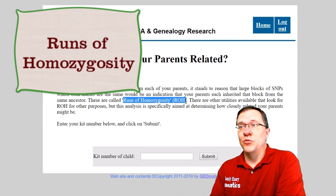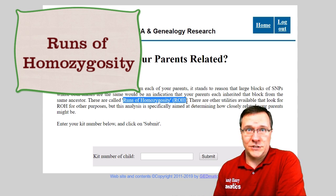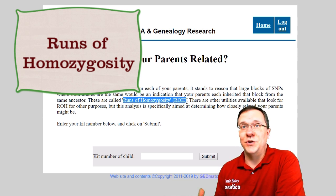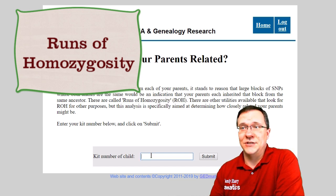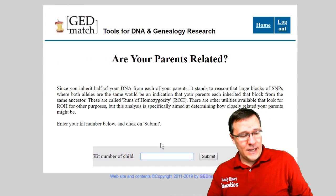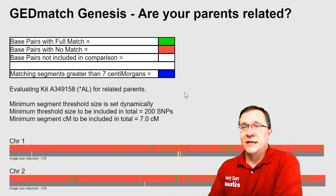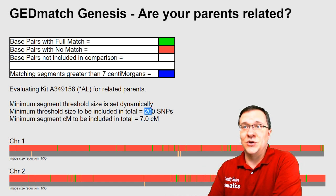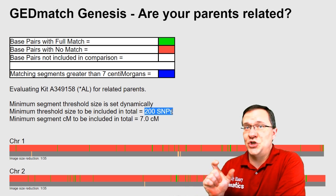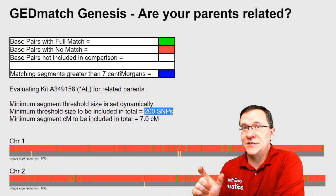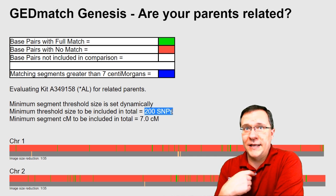These sections are called runs of homozygosity, and all you need is the kit of a child to tell whether this is the case. I'm going to add in my kit and submit it. Specifically it's looking for an area that has at least 200 SNPs in a row that are the same between my two chromosomes.